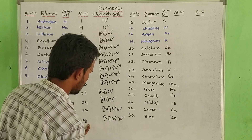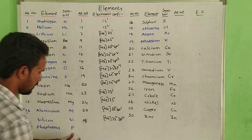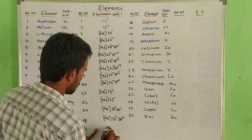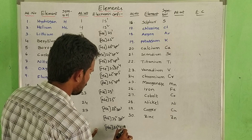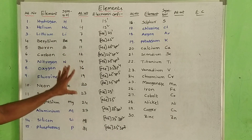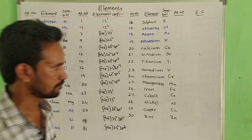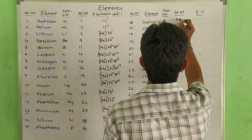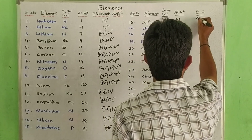Next: silicon, atomic number 14, symbol Si, atomic weight 28 — [Ne] 3s2 3p2. Next: phosphorus, symbol P, atomic weight 31 — electronic configuration [Ne] 3s2 3p3. 15 elements complete.